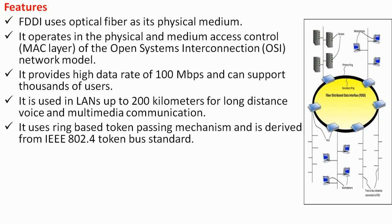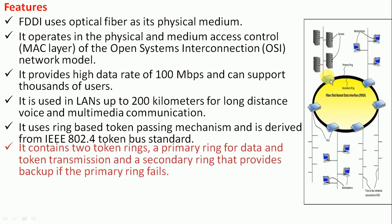FDDI uses a ring-based token passing mechanism derived from the IEEE 802.4 token bus standard. The problem with a ring topology is that if there is a disruption anywhere in the ring, the whole network shuts down, so it is important to keep the ring safe and unbroken.